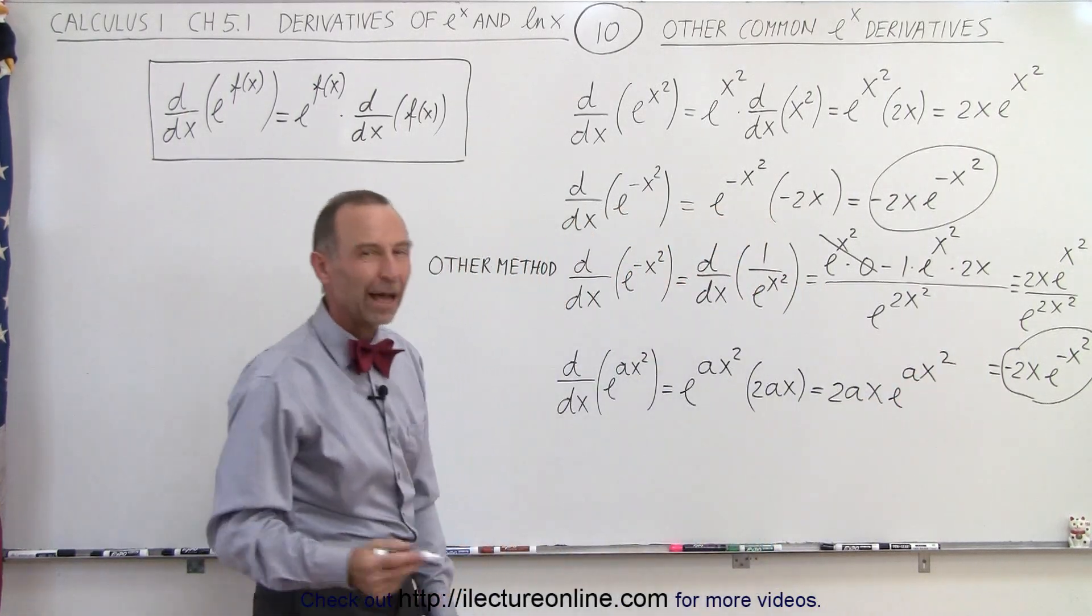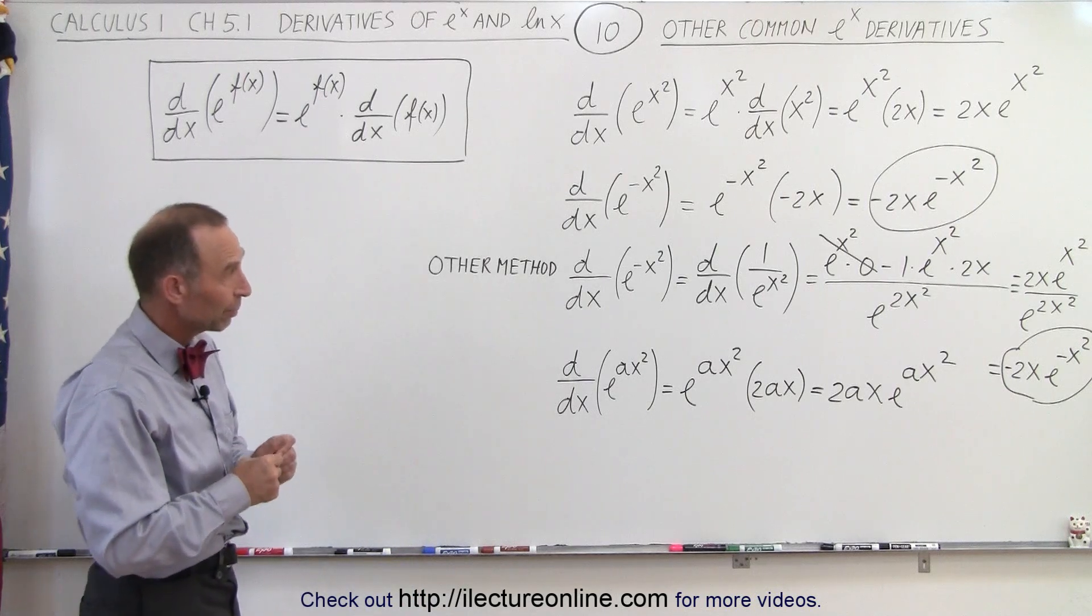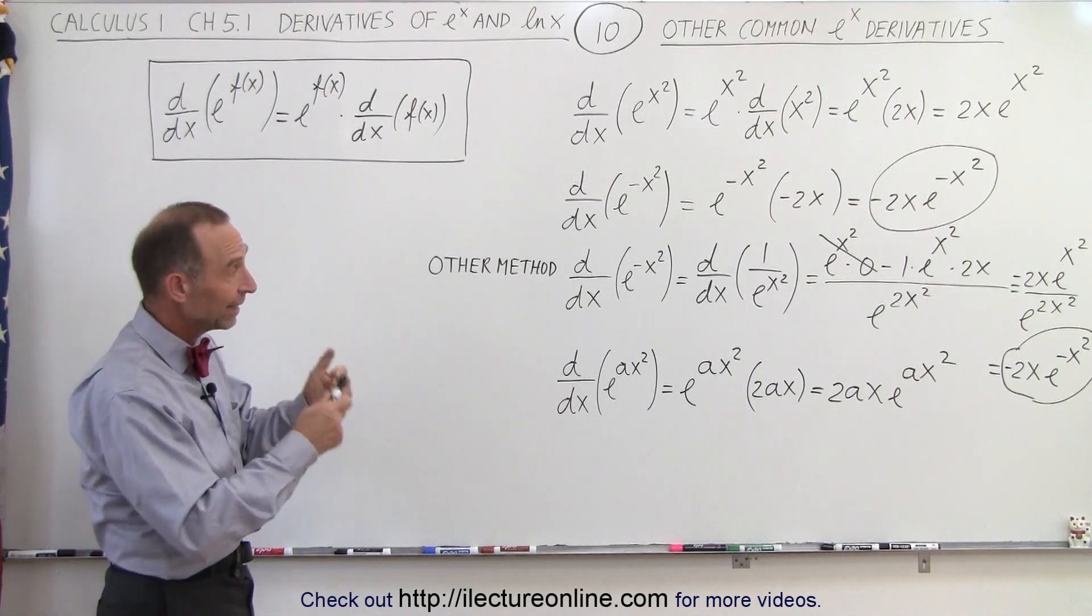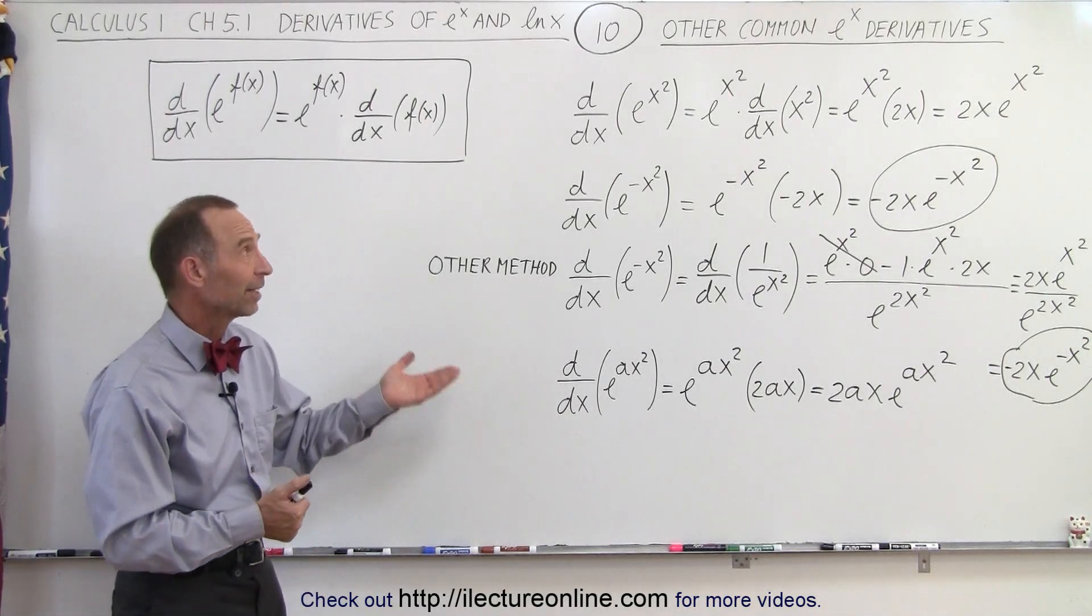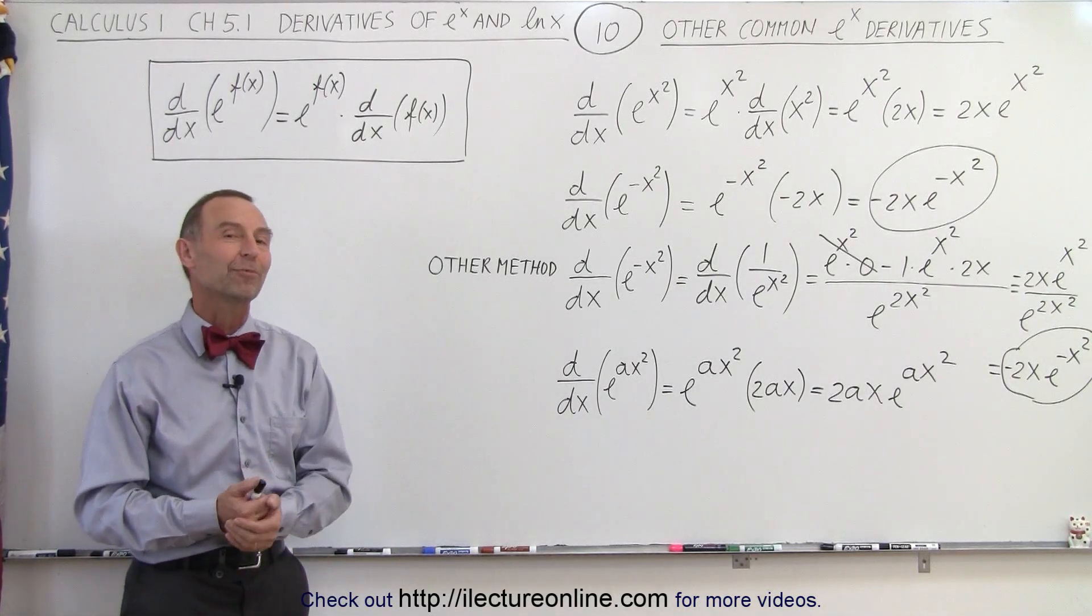So you can see, now it becomes quite simple. You simply copy the same function, and then you multiply that times the derivative of the exponent. And that's all you have to do. That's how you take the derivative of an e to the ax type function.